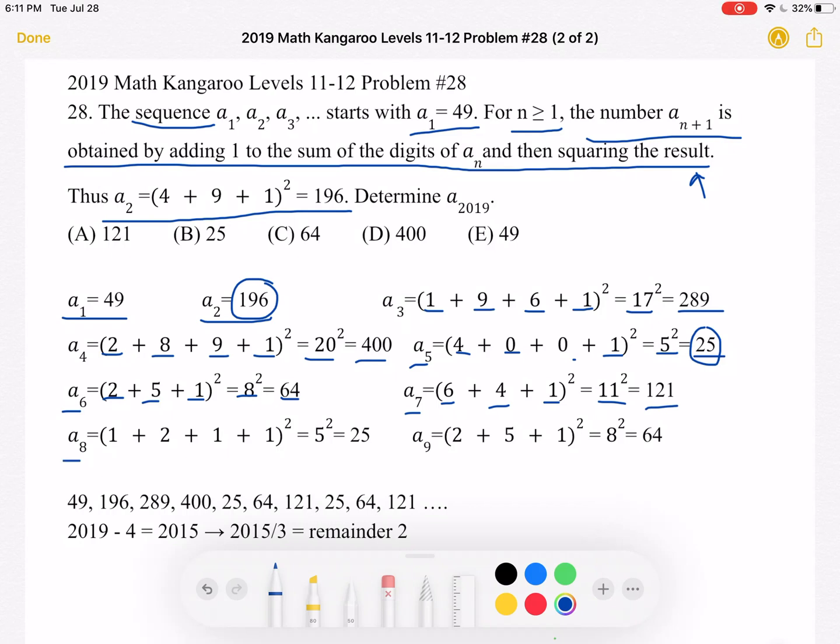Now let's look at A8. This is 1 plus 2 plus 1, and again we have to add a 1 squared, which is 5 squared, 25. Here we notice something interesting. We already got 25, and when we get 25, the next number must be 64, and then we get 121, and then we got 25 again, so this must be repeating, but let's see that this is true.